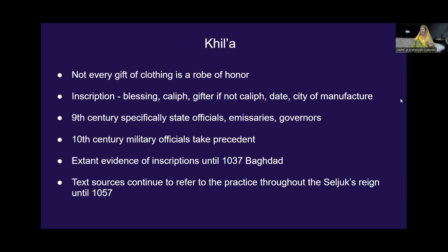The city of manufacture is kind of like a brand name — if you have a coat referred to by a particular city, that means that city is well known for that type of silk and you're bragging about it. In the 9th century khil'a were frequently given to state officials, emissaries, governors, and civil servants; in the 10th century we see that shift to mostly military officials receiving robes of honor, which tells you something about what's going on in those periods. There is extant evidence of inscriptions on clothing until 1037 in Baghdad; text sources continue referring to this practice through the Seljuk reign.